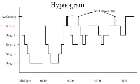Describe stage N3 of sleep. Stage N3 is the deepest sleep. This is the non-REM sleep, also known as slow wave sleep, and this is when sleepwalking, night terrors, and bedwetting happen. The EEG waveform observed is delta, which has the lowest frequency and the highest amplitude — the opposite of the beta waveform.